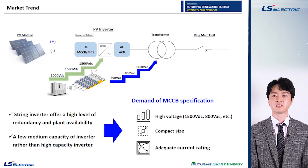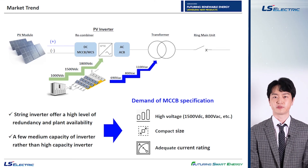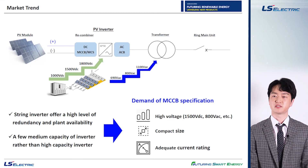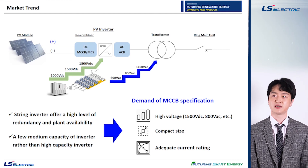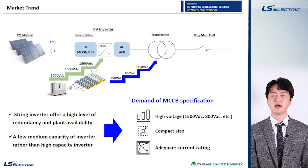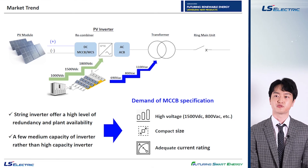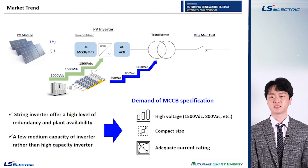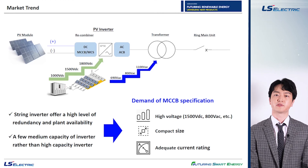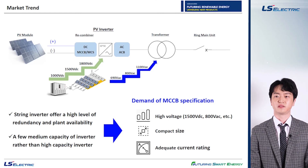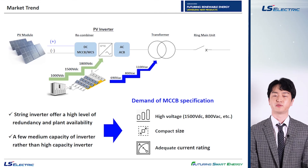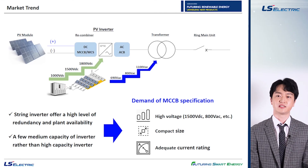There is high demand for decentralized configuration of energy systems for a high level of redundancy and plant availability. In terms of cost and benefit, the US and China, which are the top two biggest countries for global PV markets, are considering a decentralized system. This will naturally lead to demands for high voltage up to 1500 DC volts and adequate current rating.